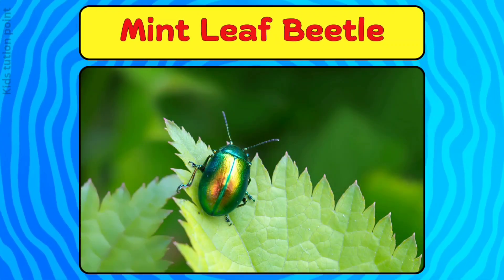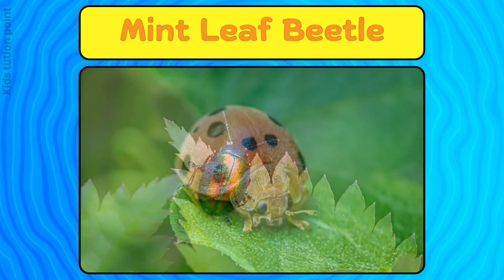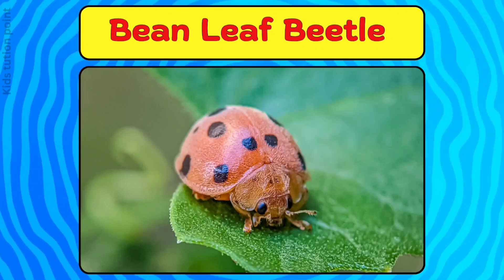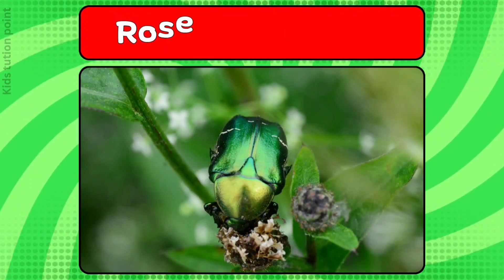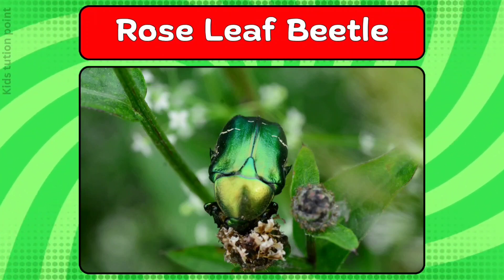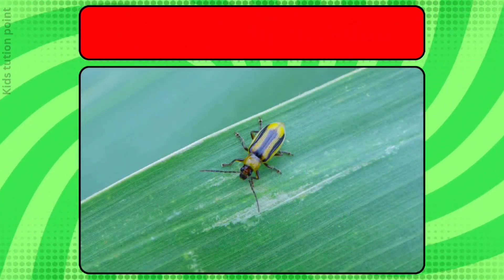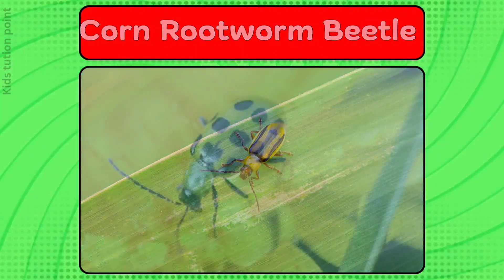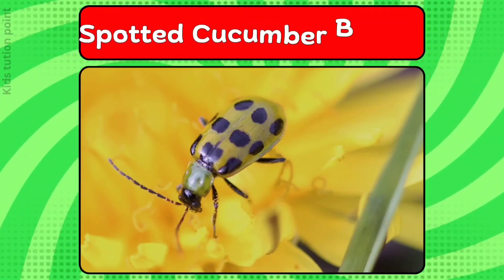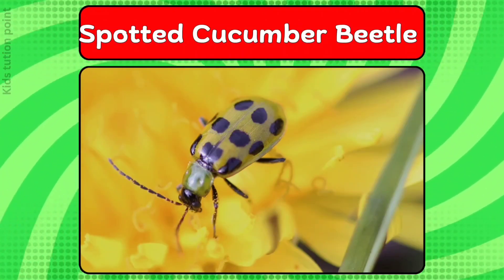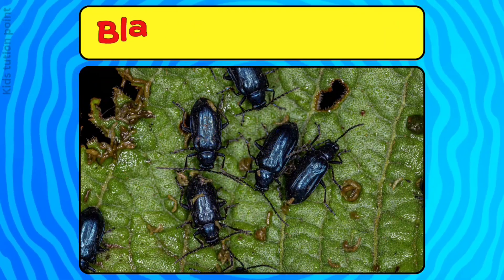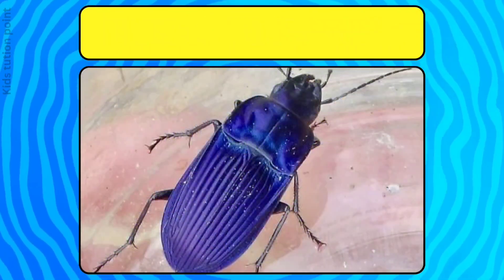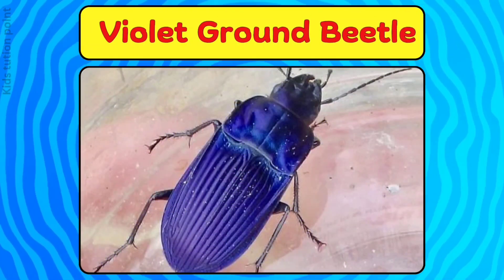Mint leaf beetle. Bean leaf beetle. Rose leaf beetle. Corn root worm beetle. Spotted cucumber beetle. Black clock beetle. Violet ground beetle.